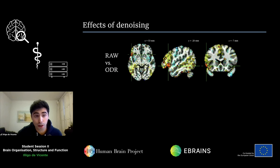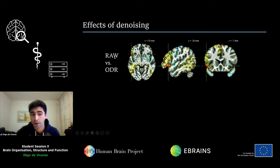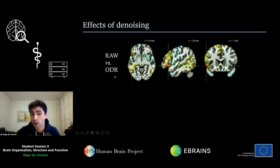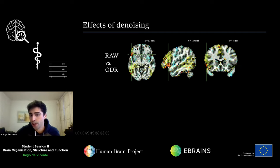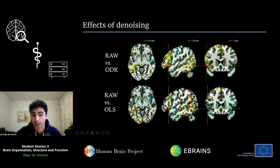In this figure, we are showing the statistical differences between raw activation maps — those without any denoising — against those obtained after ODR denoising. We can see that most of the denoising was in this region right here, which is called the pars orbitalis, and it's very close to the sylvian fissure. This was found as well in the OLS denoising, but as you can see, this was in a much weaker way.